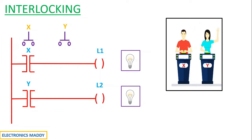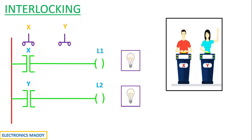Whenever X knows the answer, X will press the push-button switch, the contact corresponding to X will get energized and the rung corresponding to X will get energized, and consequently the light glows. Now if Y knows the answer as well, Y presses the push-button switch, the contact corresponding to Y gets energized, the rung corresponding to Y gets energized, and the light starts glowing.